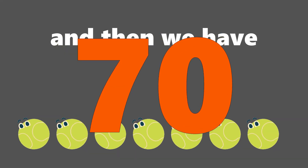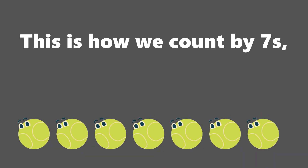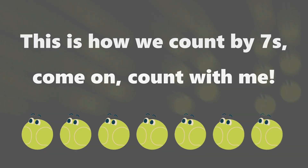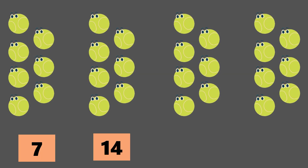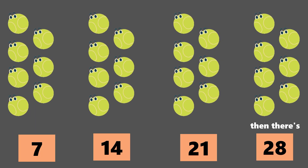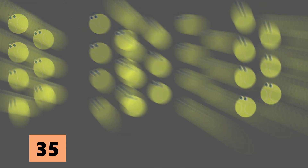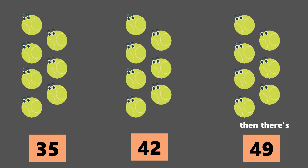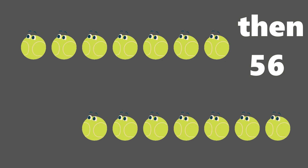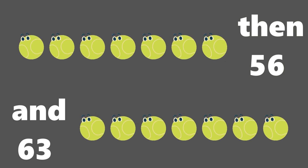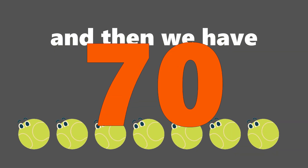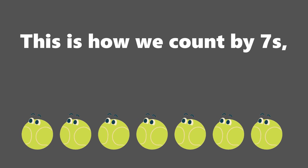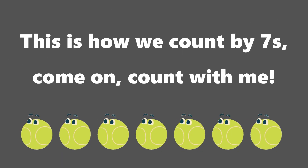And then we have 70. This is how we count by 7s. Come on, count with me: 7, 14, 21, then there's 28, 35, and 42, then there's 49, then 56 and 63, and then we have 70. This is how we count by 7s. Come on, count with me.